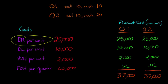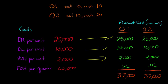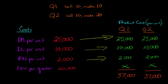To compute product cost per unit, we take the per-unit direct materials, direct labor, and variable overhead and sum them up. However, fixed overhead does not come over — we've got X's there because under variable costing we are not including fixed overhead as a product cost. It's going to be a period cost. So the product cost per unit is $37,000 in each quarter — the exact same amount — which makes sense because nothing has changed about our cost structure.